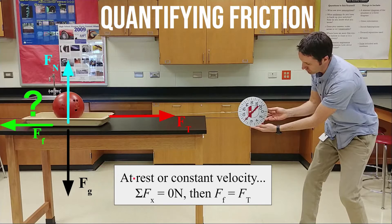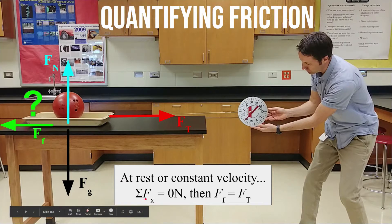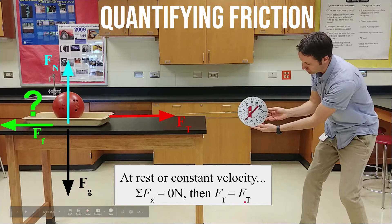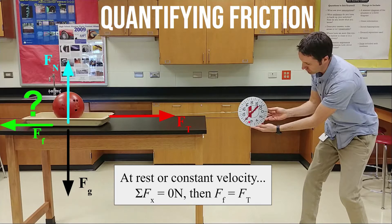Now, if this sled is at rest or it's moving at a constant velocity, we know the sum of the forces on the sled in the x direction horizontally has to be zero. So as long as it's at rest or it's moving at a constant velocity, the quantitative size of the frictional force has to be the exact same size as the force of tension. Whatever the force of tension is as measured by the spring scale, that's the same size as the frictional force.